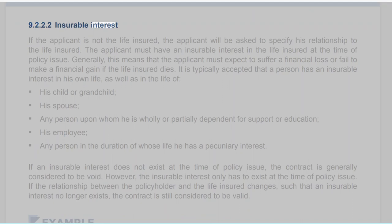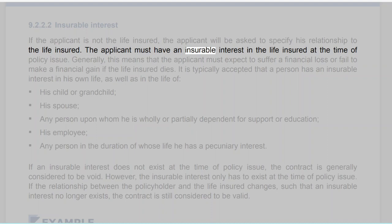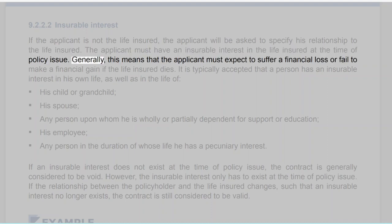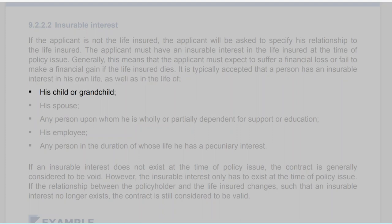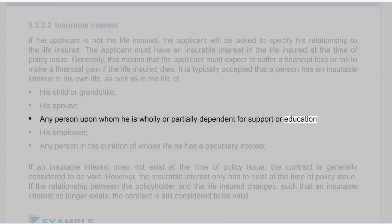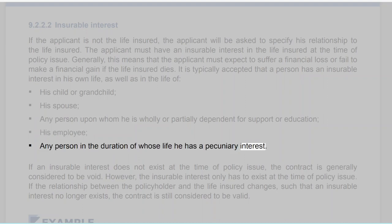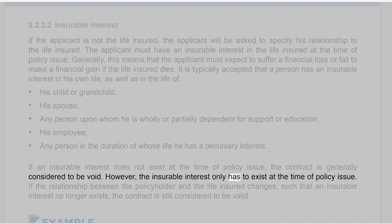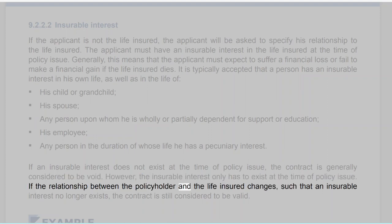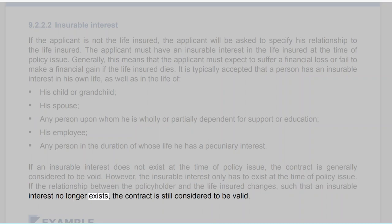Section 9.2.2.2: Insurable Interest. If the applicant is not the life insured, the applicant will be asked to specify his relationship to the life insured. The applicant must have an insurable interest in the life insured at the time of policy issue. Generally, this means the applicant must expect to suffer a financial loss if the life insured dies. It is typically accepted that a person has an insurable interest in his own life, as well as in the life of his child or grandchild, his spouse, any person upon whom he is wholly or partially dependent for support or education, his employee, and any person in the duration of whose life he has a pecuniary interest. If an insurable interest does not exist at the time of policy issue, the contract is generally considered to be void. However, the insurable interest only has to exist at the time of policy issue; if the relationship changes afterward, the contract is still considered valid.